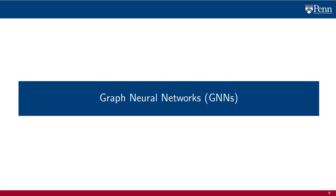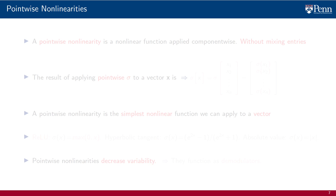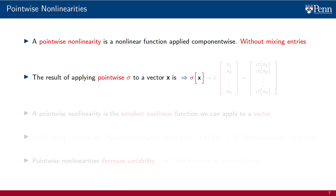We have reached the momentous time when we are ready to define graph neural networks. We start with a brief parenthesis to discuss point-wise nonlinear functions. That a function is point-wise, or a point-wise nonlinearity, means that when applied to a vector x, it is applied to individual components without mixing entries.